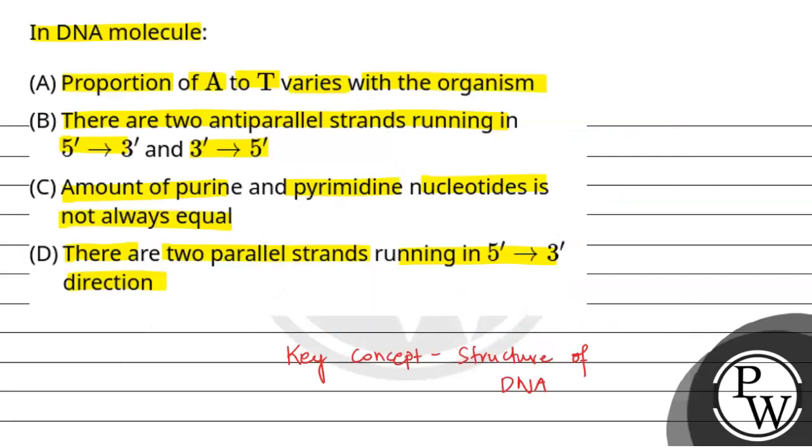So coming back to the question: the first option says proportion of A to T varies with the organism - this is wrong. Second is there are two antiparallel strands running from the 5' to 3' and 3' to 5' - this is completely correct. Third, the amount of purine and pyrimidine nucleotides is not always equal - this is also wrong. And the fourth is there are two parallel strands - no, they are antiparallel. So the final answer for this question is option B.